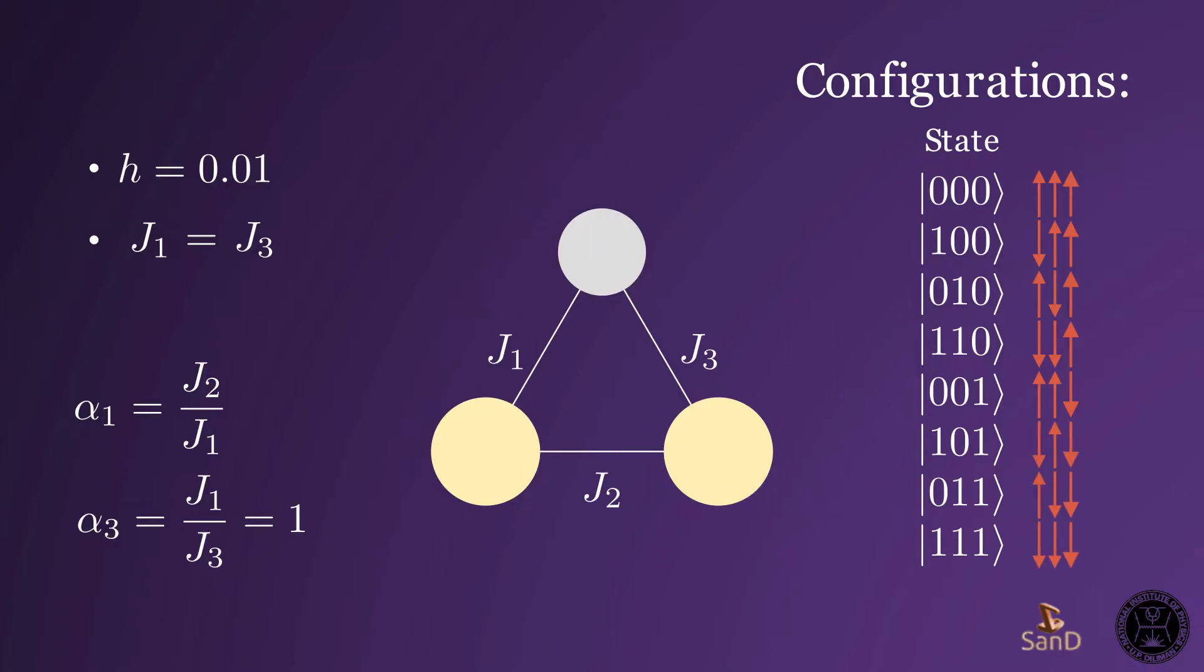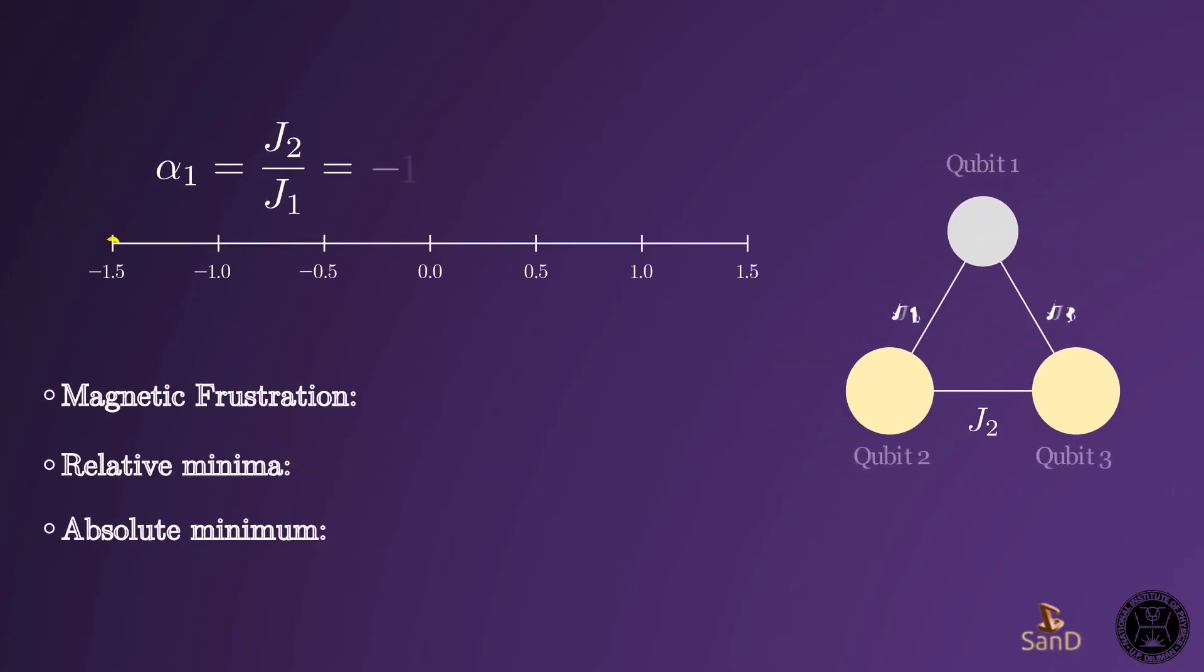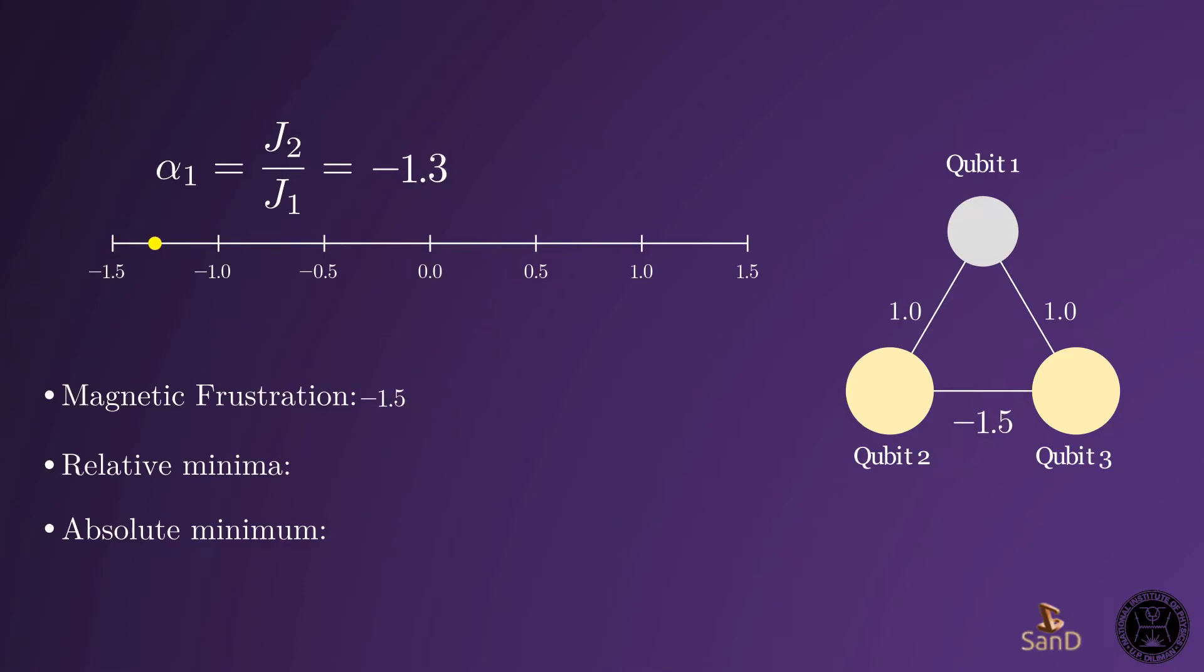To systematically do this, we take the ratio alpha-1 between the first two couplings and vary it. Running on the Qiskit quantum simulator, for both positive and negative values of alpha-1, we found that the algorithm reached absolute minima when there was symmetry. By symmetry, I mean that J2 is equal to half multiples of J1. Some cases led to relative minima, but most led to unstable magnetic frustration.